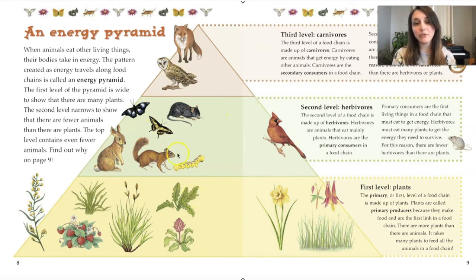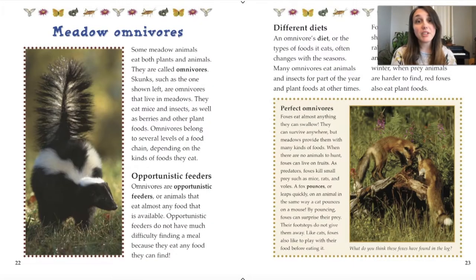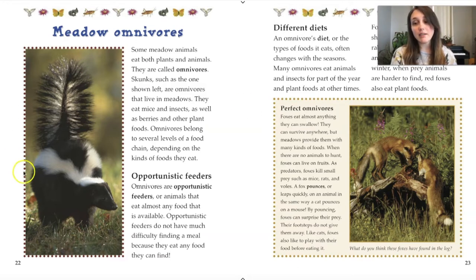There needs to be a lot of producers to support the second level, which is made of herbivores. They're also called consumers because they have to consume food to get energy, but they're specifically herbivores because they only eat plants. Then at the top level we have carnivores, who get energy by eating other animals — carnivores are also consumers. There are also omnivores, which are animals that eat both plants and animals to survive. Skunks are the example provided here of a meadow omnivore.